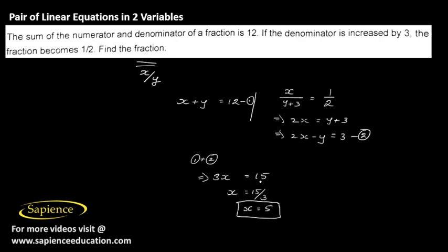5 + y = 12, which means y = 12 - 5, or the value of y will be 7. So the required fraction is x/y, that is 5/7.